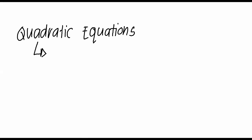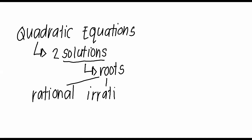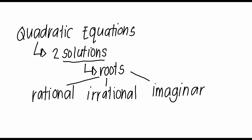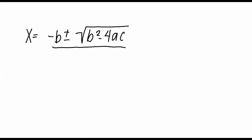Quadratic equations have two solutions, solutions that we also call roots. Roots can be categorized as rational, irrational, and imaginary. Now, let us recall our quadratic formula, which is negative b plus and minus square root of b squared minus 4ac, all over 2a. For the formula of the discriminant, we have b squared minus 4ac.